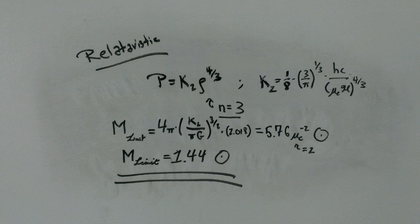Currently, the accepted value for the mass limit sits at about 1.39 solar masses. By further eliminating ever more assumptions in the math, a more accurate result can be attained.